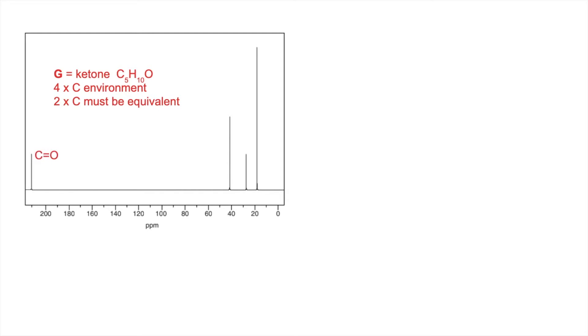So the types of environments we've got, we've got C=O, which obviously ties in nicely with the fact that it's a ketone, and we've got three C-C environments. So when you try and work out a structure for this, there's only one possible thing it could be, and it's that one there.